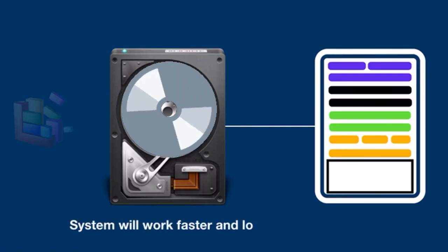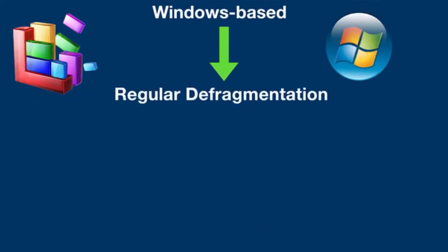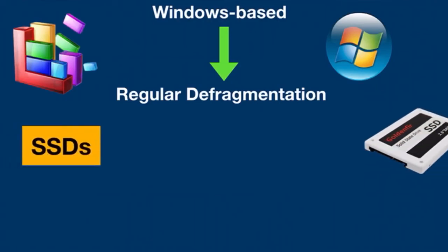Windows-based computers require regular defragmentation. Unix and Linux-based computers don't need it because of a different structure for storing data, even if similar hardware is used. SSDs also don't require defragmentation.